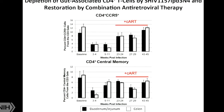In these animals, after infection, gut-associated CD4 cells were depleted as shown in the upper and lower panels. Upon starting ART treatment, we saw recovery of CD4 T cells in the gut and lymph nodes, shown here from the colon and the duodenum.